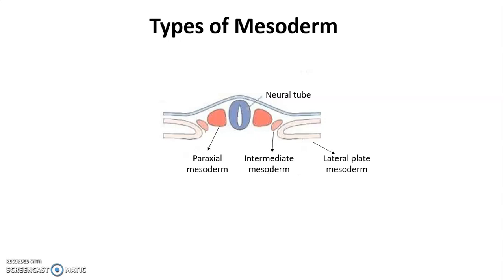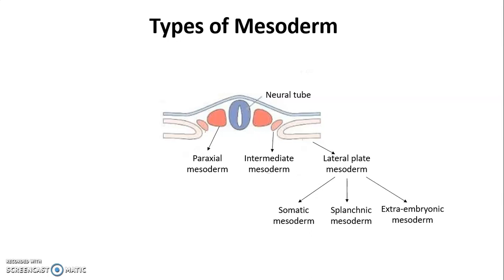Lateral plate mesoderm further differentiates into three types: somatic mesoderm, splanchnic mesoderm, and extra-embryonic mesoderm. This information is going to be useful for you for the lecture.